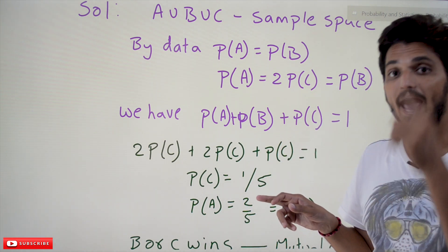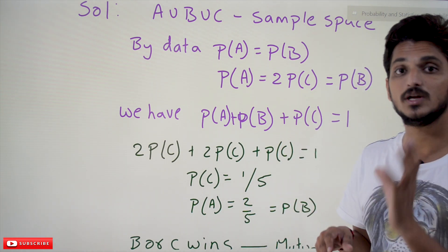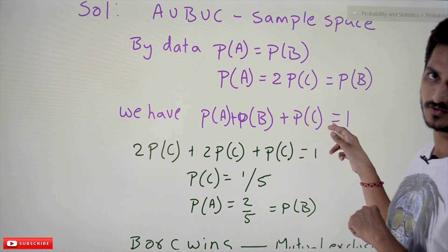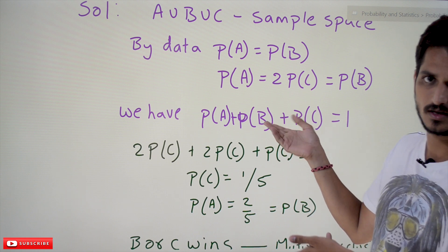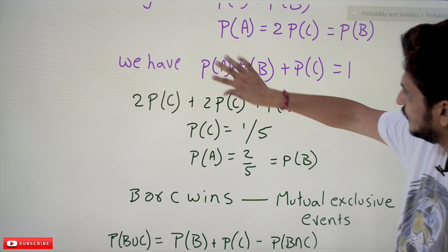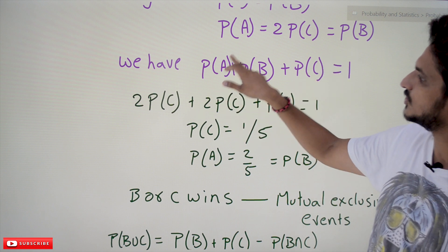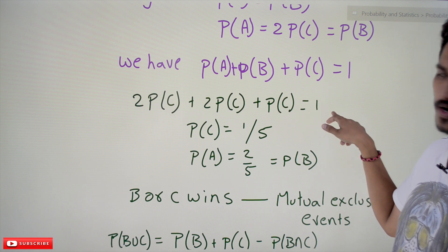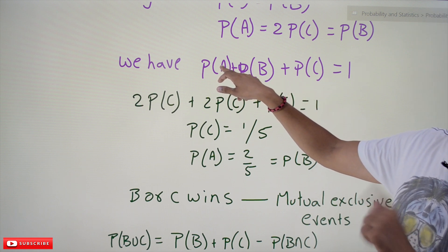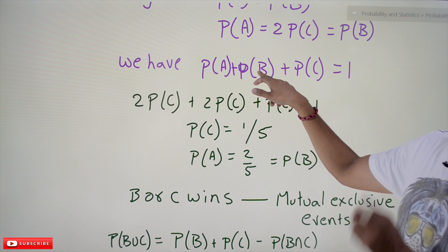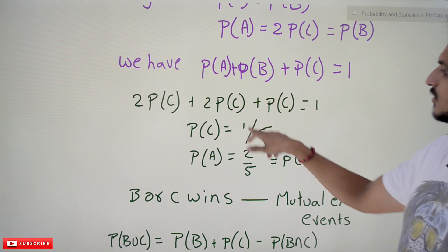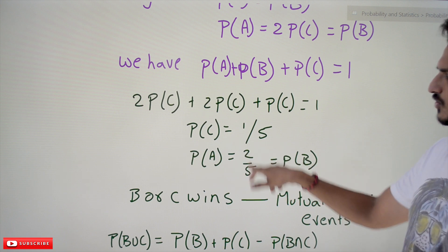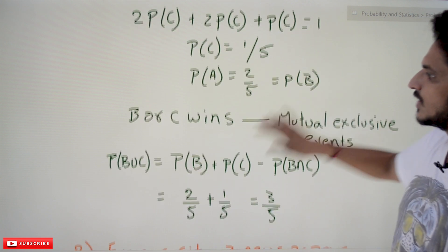From the axioms of probability, probability of the sample space equals 1, so P(A) + P(B) + P(C) = 1. Substituting: 2·P(C) + 2·P(C) + P(C) = 1, which gives 5·P(C) = 1, so P(C) = 1/5, P(A) = 2/5, and P(B) = 2/5.